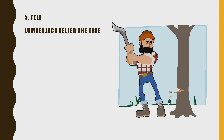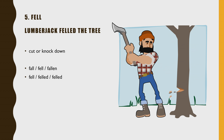Fell — the lumberjack felled the tree. That means to cut or knock down. It is a transitive verb, meaning it takes an object. It is different from the word fall (fall, fell, fallen). The tree falls, but it takes the lumberjack to fell the tree, and then the tree will fall down. So it's a totally different word, and the conjugation for this word is fell, felled, felled.